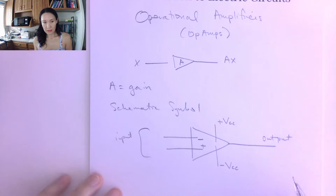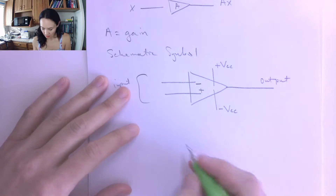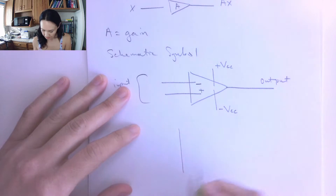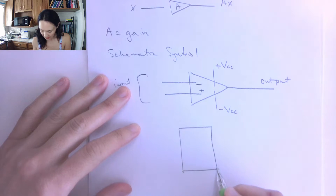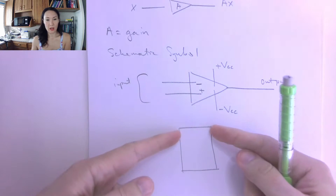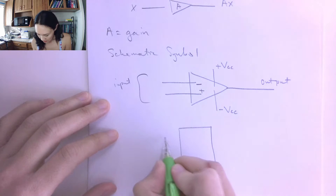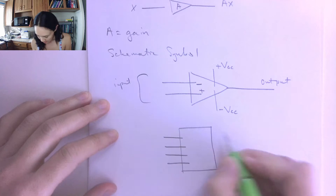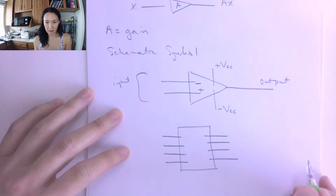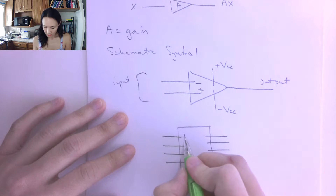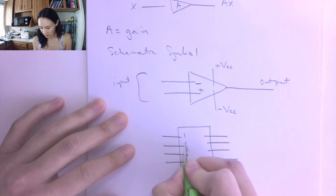This is a basic integrated circuit. It comes in a dual inline package, which means there are pins on both sides — four pins on each side for a total of eight. We start at pin one and number the pins going around.